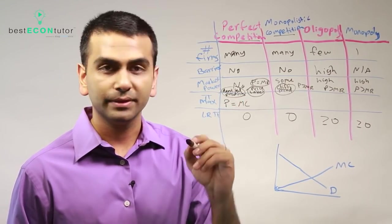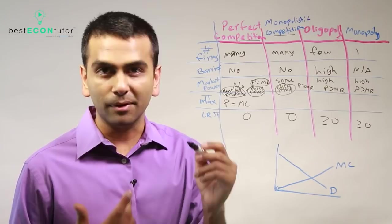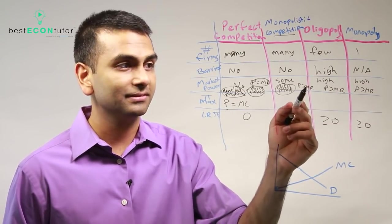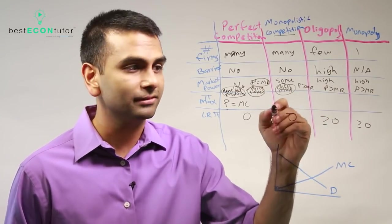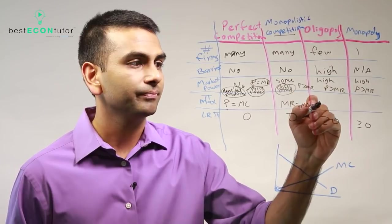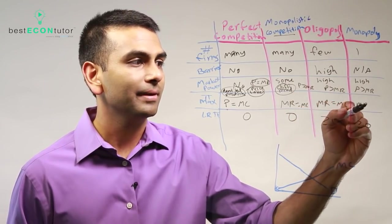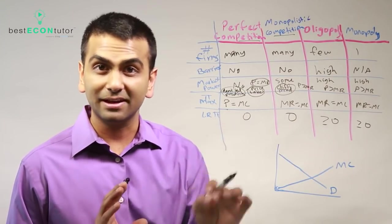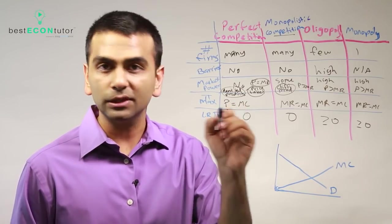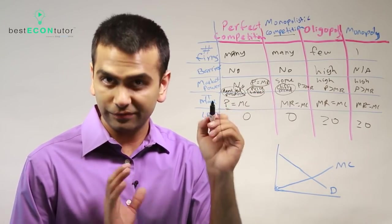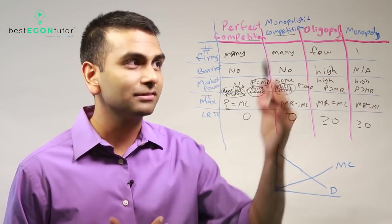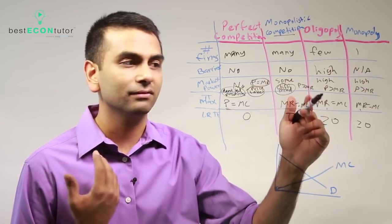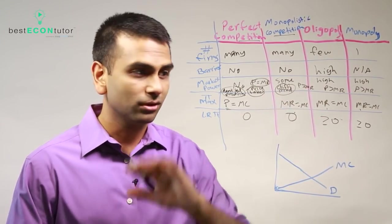To maximize profit in perfect competition, P equals MC works because P and MR are the same thing. But for the other three market structures, you can't use P equals MC because P and MR are not the same. So for all three of those, to maximize profits you want MR to equal MC. MR equals MC is actually a universal condition — for any market structure, MR equals MC maximizes profit. You can additionally use P equals MC for perfect competition since P and MR are equal there.